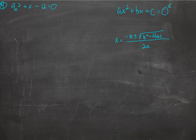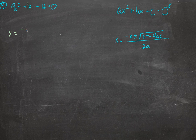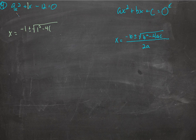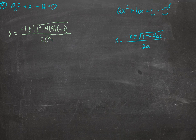We find x by taking negative b. What's b? b is the number that's multiplied by x — always the number multiplied by x. So I find that number, which is 1. We put 1 right there, plus or minus the square root of b squared, which is 1 squared, minus 4 times a, that's 9, times c, which is negative 12, all over 2 times a.